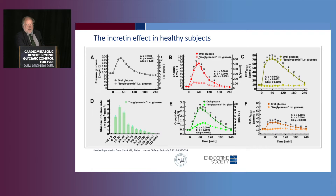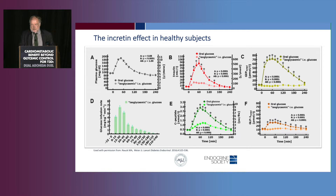If you infuse glucose intravenously, nothing happens. But if you make them drink a glucose drink, then GIP levels go up several fold, and GLP-1 concentrations follow a similar pattern, albeit at a lower level. This difference in insulin secretion — measured by C-peptide to prove it's truly a secretion difference — determines the role of gut hormones. Without gut hormones, we would have had much less insulin secretion and certainly a much higher rise in glucose. This proves the physiological importance of incretins.